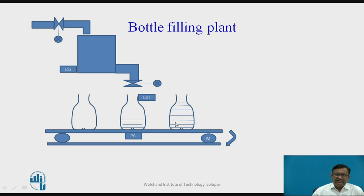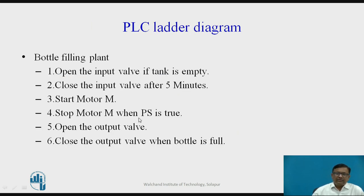This is the operation of the bottle filling plant — the filling of the tank and the filling of the bottles. Now let us see how we can implement it using the ladder diagram. This is a PLC ladder diagram for the bottle filling plant, and here we have 6 different steps.